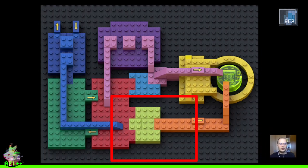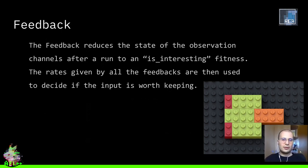Now we discuss the feedback entity — the entity that manages and handles the data inside the observation channels. The main purpose of feedback is to produce a fitness value: whether the state of the observation channels is interesting, meaning that the test case related to the last execution is interesting and can be added to the corpus of the fuzzer. This corpus is evolved during the fuzzing algorithm and is used for mutations and so on. So it's a function with a state that assigns a score to executions.